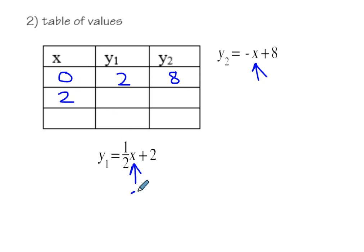If I come here and I plug in my two, one-half times two, that's one, plus two is three. So I have my three here. If I plug my two here, I'm going to have minus two plus eight. That gives me six. So again, it's not my solution.